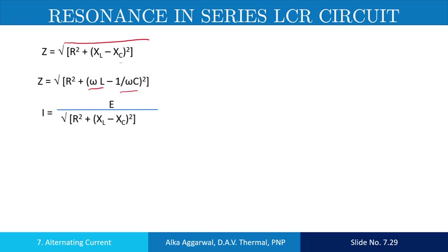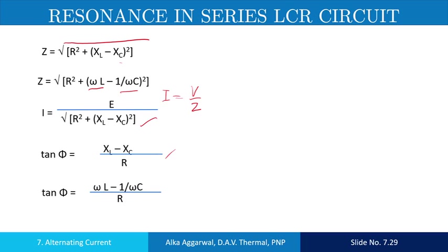The current is equal to V upon the impedance. So here we put the value of the impedance and it gives the current through the series LCR circuit. The phase angle between the current and the voltage is given by putting omega L in place of XL and 1 upon C omega in place of XC.